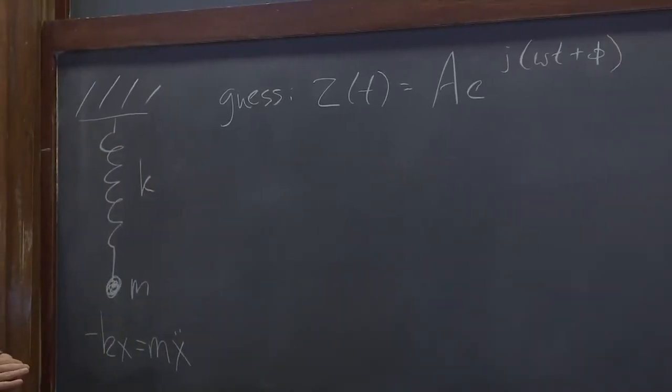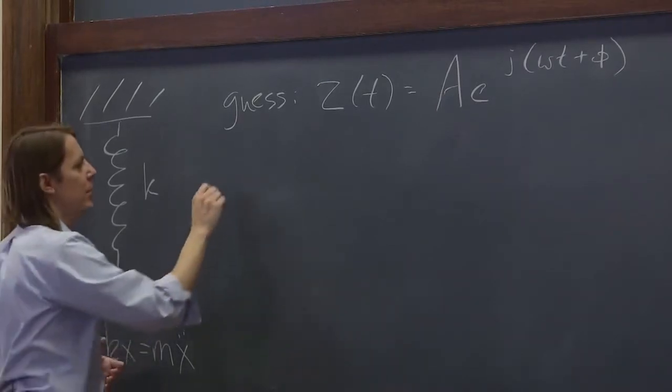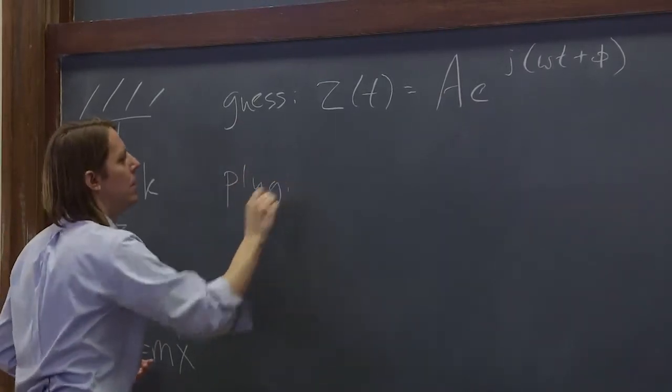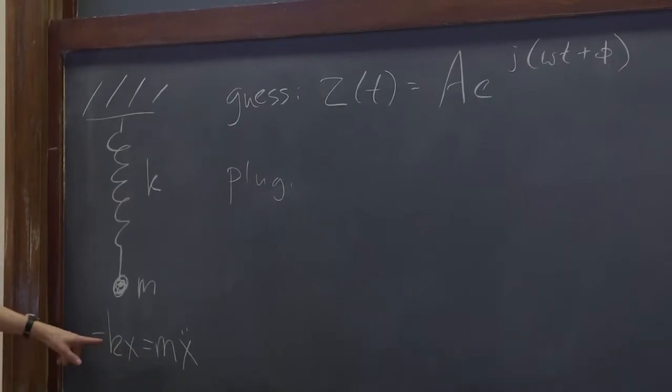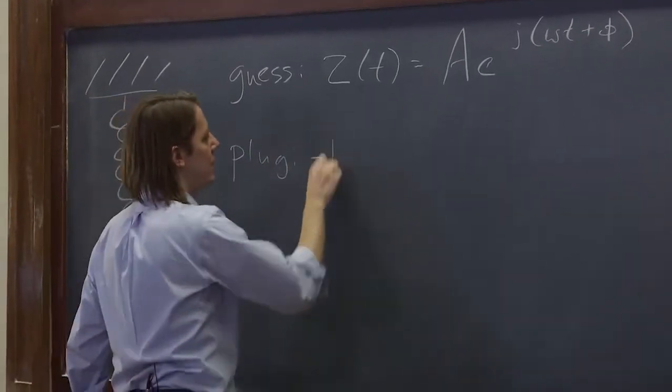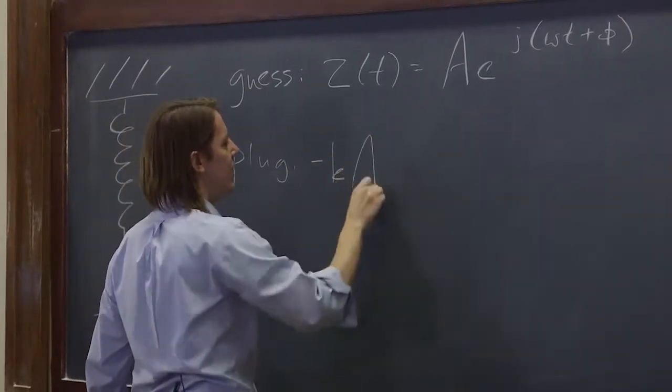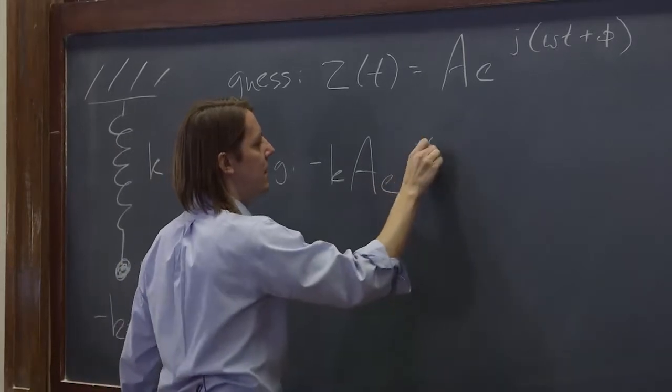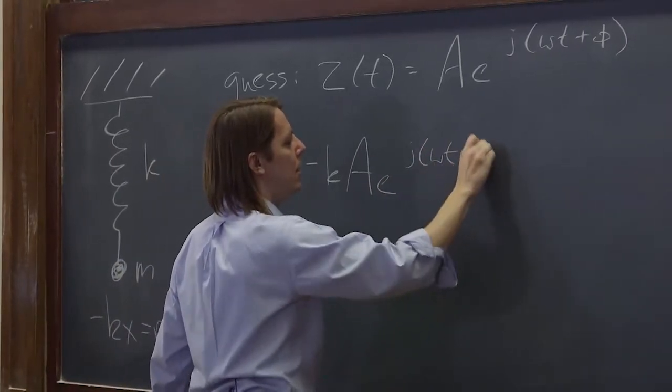We won't bother with the a, b, c. We'll just go ahead and call it what it is. Let's plug in. So minus k times x minus k, and x is a, e to the j omega t plus phi